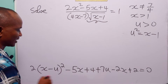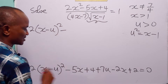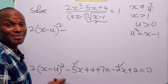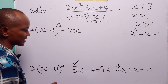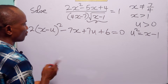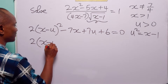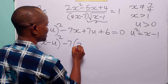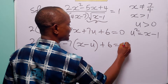Expanding minus 2 times (x minus 1) gives minus 2x plus 2. So we have 2(x minus u) squared, then minus 5x plus 4 plus 7u minus 2x plus 2, which equals 0. Combining: minus 5x minus 2x is minus 7x, and 4 plus 2 is 6. Before then, we add plus 7u. So we have 2(x minus u) squared minus 7x plus 7u plus 6 equals 0. Looking at the last two terms, we can see a common factor of 7, giving 2(x minus u) squared minus 7(x minus u) plus 6 equals 0.